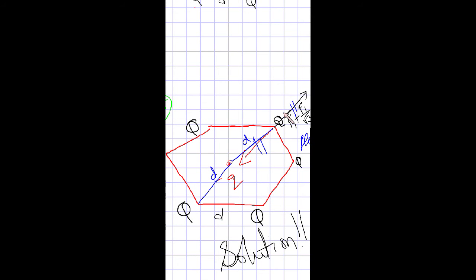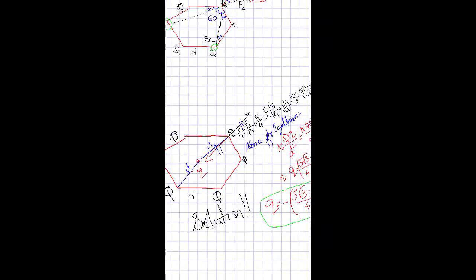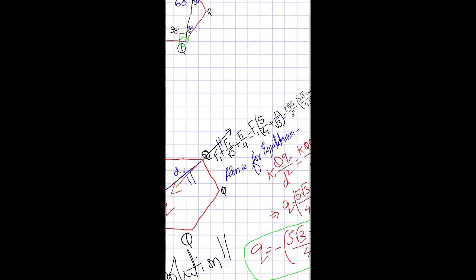In order to counterbalance this outward resultant, the charge placed at the center must be negative, so that the attractive force on the corner charge points inward. The net resultant due to all the outer charges is f1 + f1/√3 + f1/4 = f1·(5/4 + 1/√3).